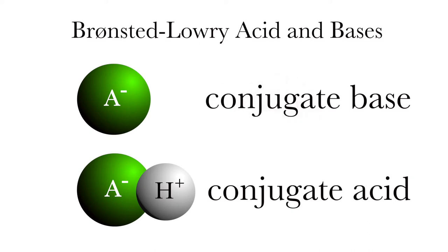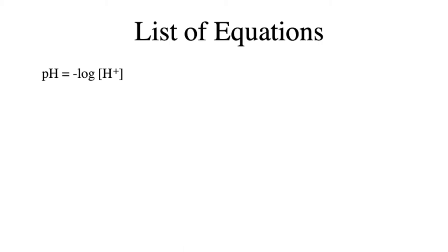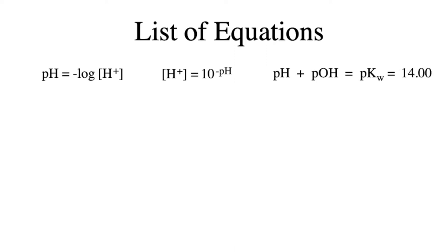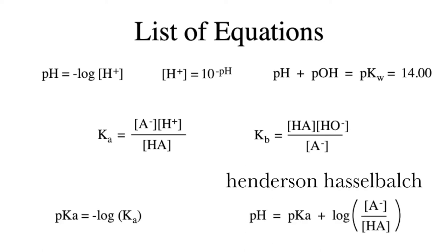You'll be using quite a few formulas for this particular lab. pH is the negative log of the concentration of H+, which of course means the opposite is true: H+ equals 10 to the negative pH. Also pH plus pOH equals pKw, in other words 14, and of course formulas for Ka and Kb, as well as the Henderson-Hasselbalch equation.